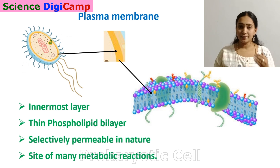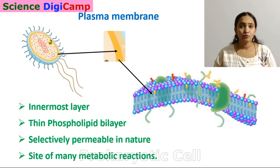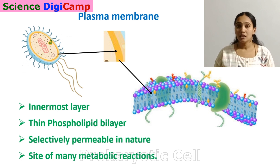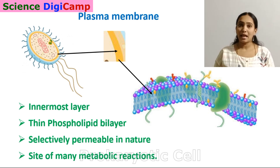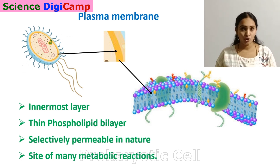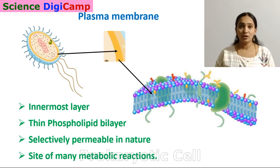The plasma membrane is a site for many metabolic reactions like metabolism, fermentation, and even photosynthesis. While we generally associate photosynthesis with plants, the plasma membrane of certain bacteria contains photosynthetic pigments, allowing bacteria to prepare food by absorbing light like plants and algae. Through this membrane, the cell also exchanges molecules like food, gases, and other vital ingredients.